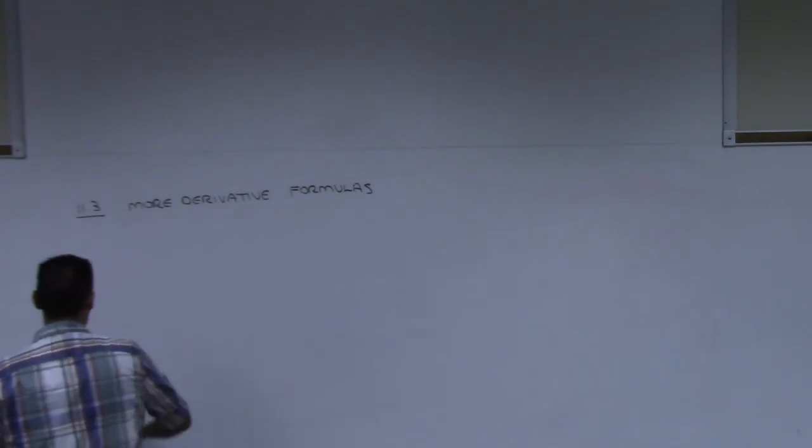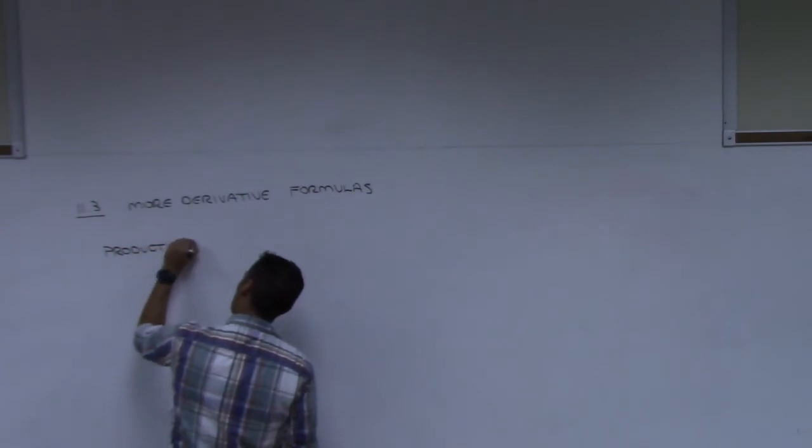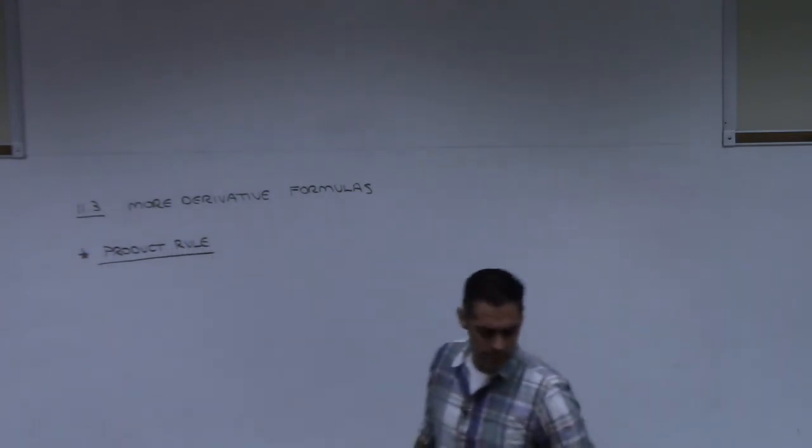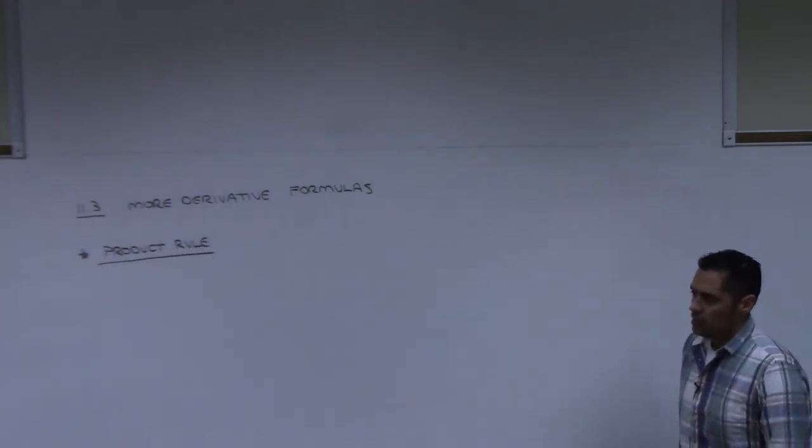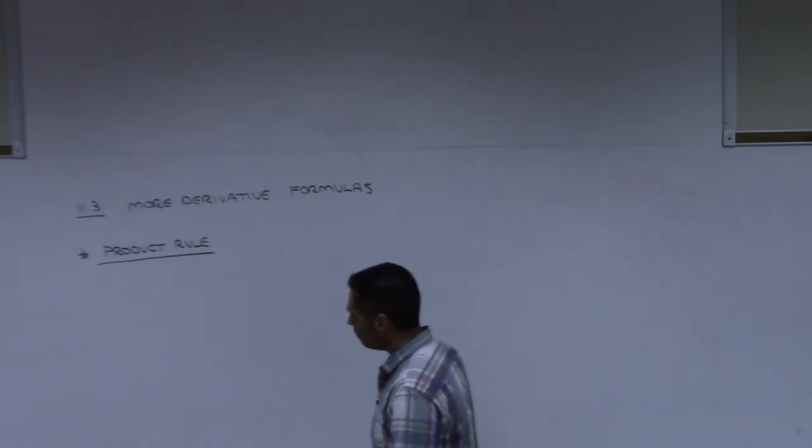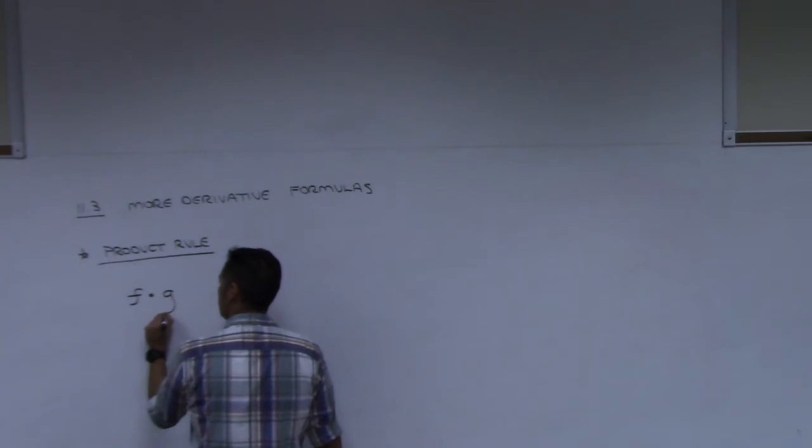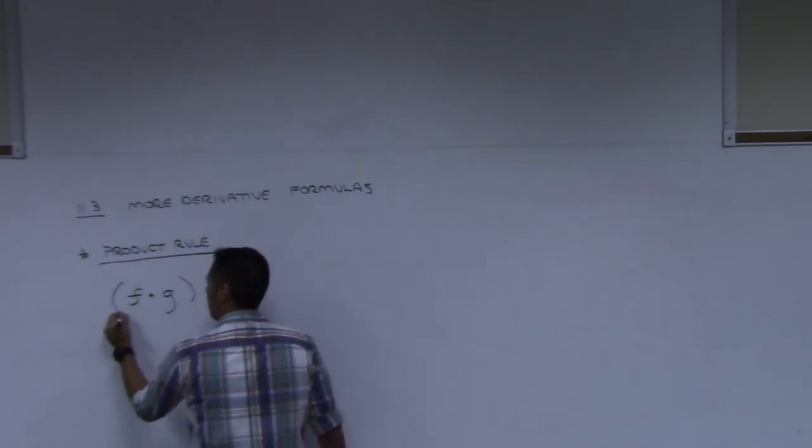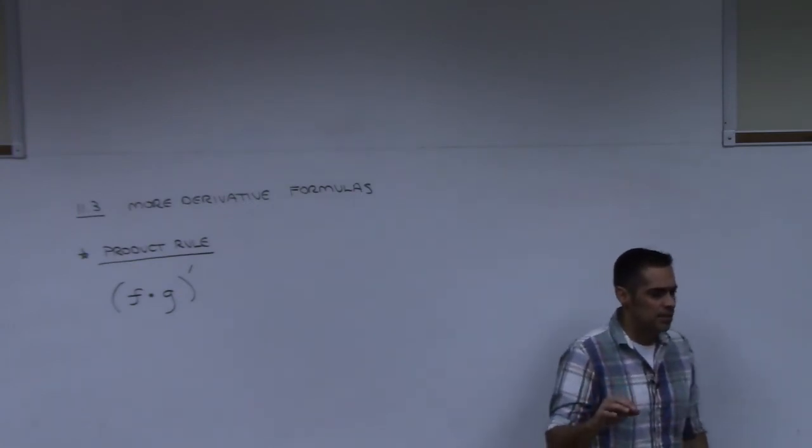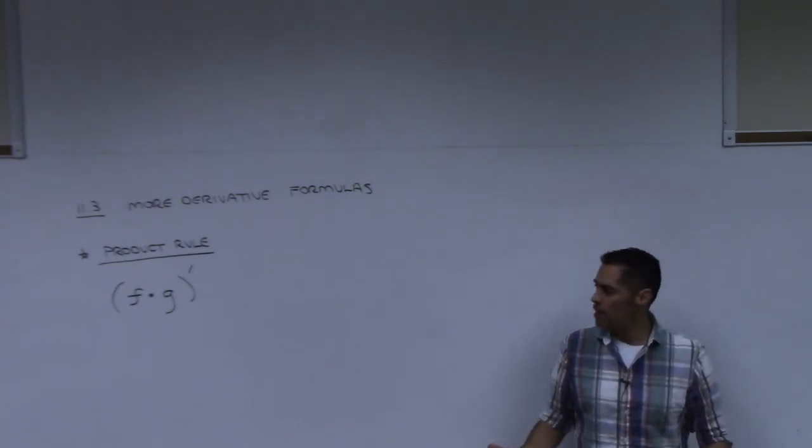And I think I'll just do the product rule right now. So product rule. And this is really an important rule. So let me see if the notation that I use here makes sense to you. You're going to tell me whether or not you like this. If I have some function f multiplied by some function g and I put that in parentheses with the prime mark on it like that. Do you all understand with that notation what I mean is you've got two things multiplied and you want to know what their derivative is. Does that make sense? Okay.